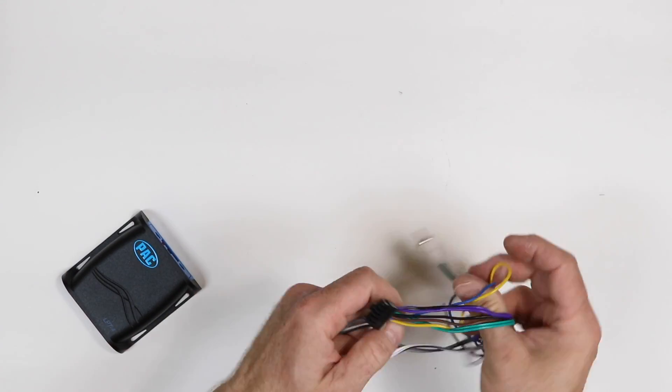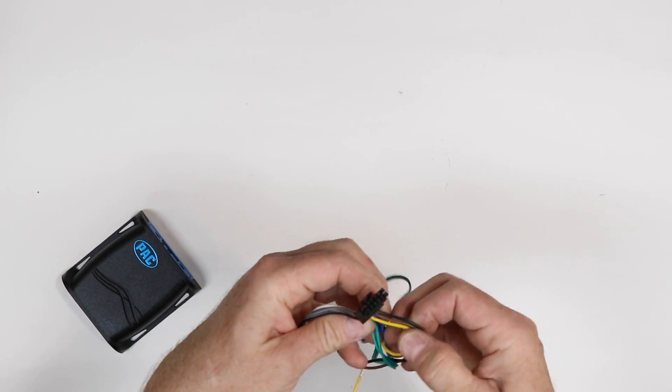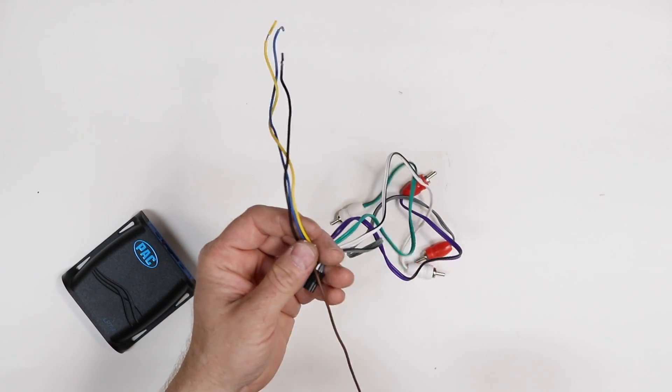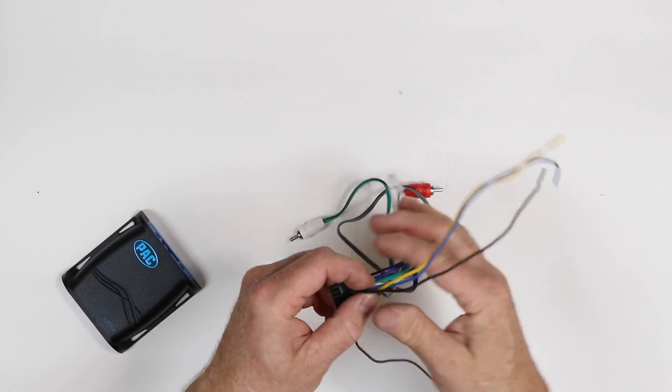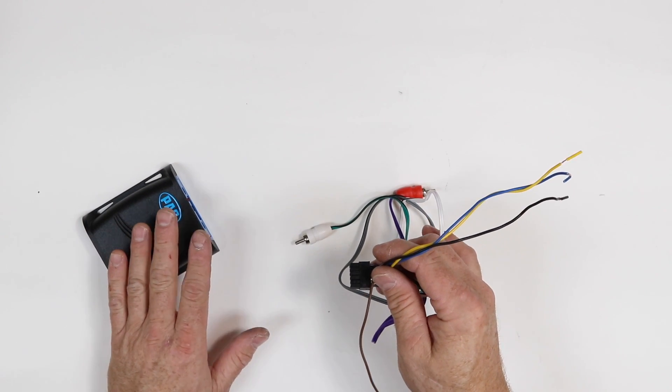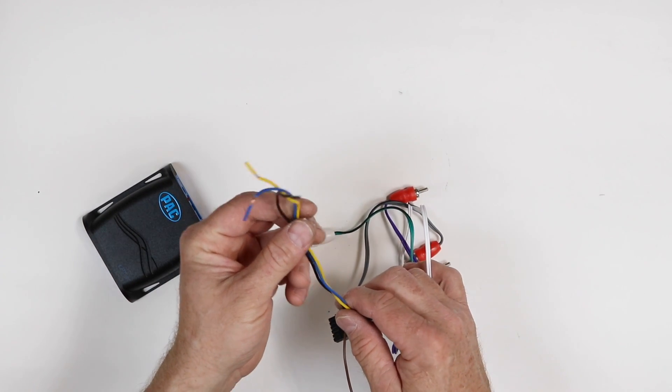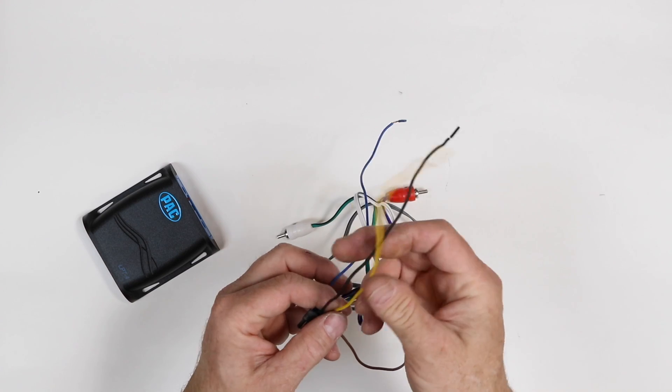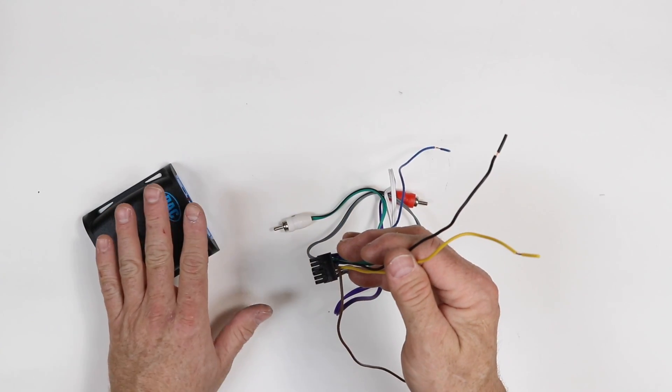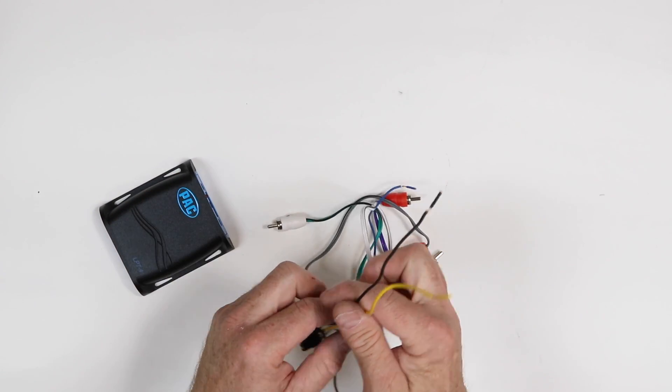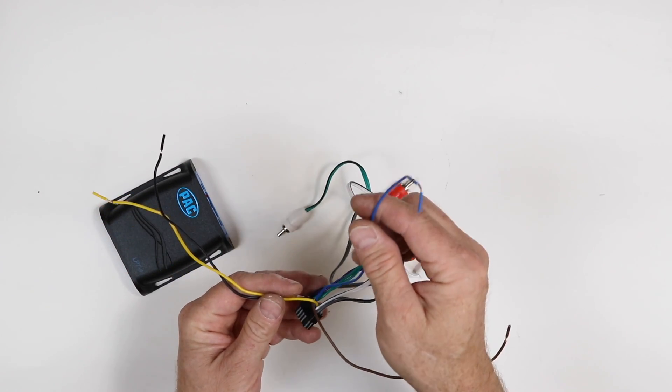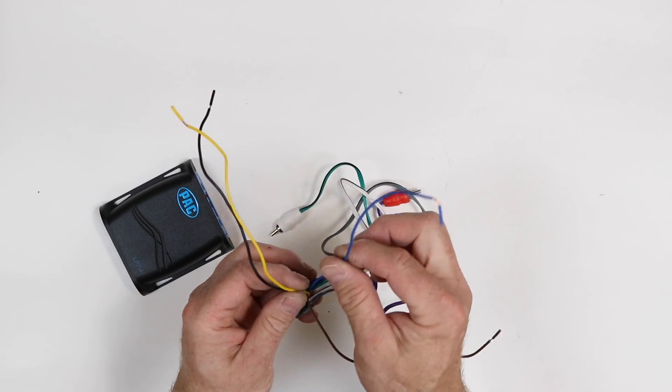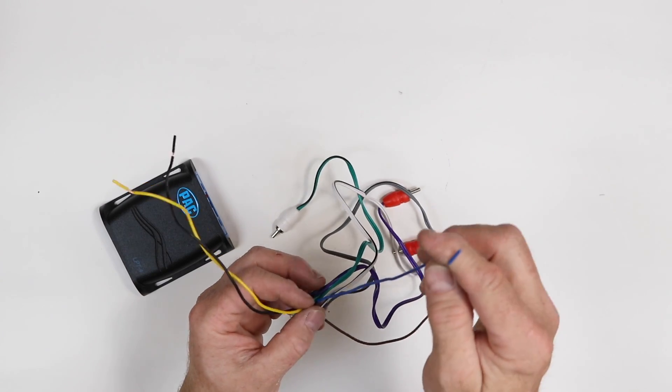Now the one reason why this particular high level to low level is so desirable is for these wires right here, not the brown one, but the yellow, blue and black. This particular high level to low level adapter along with summing will allow us to generate a remote turn on. All we have to do is hook the yellow and black up to battery and ground, and then when it senses signal coming from the speakers, it will automatically generate a remote turn on. That's all you have to do. Power, ground, and it will create a remote turn on. This is to turn on the amplifier.